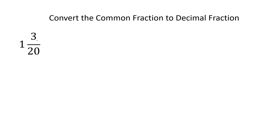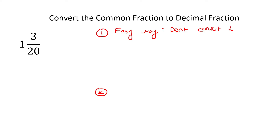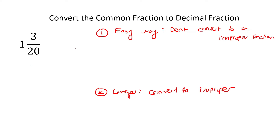Here's one with a mixed number. There's an easy way to do this and a difficult way — I'll show you both. The easy way is: don't convert to an improper fraction. The difficult way, or the longer way, is to convert to an improper fraction. I'm going to show you both, but from this one onwards I'll mainly use method one — convert to an improper — just in case your teachers are showing you this longer method. So we completely ignore the whole number part for now and just do the fraction part.